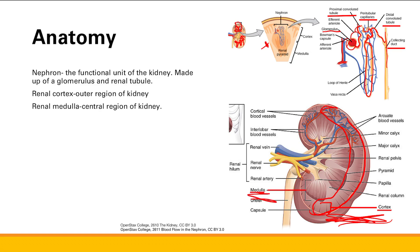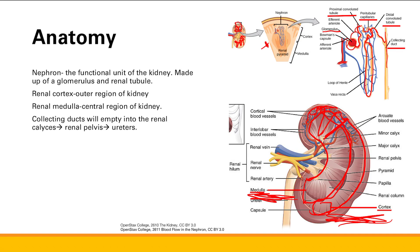Next is the renal medulla — that's the inner central region of the kidney. The nephron is going to traverse both the renal cortex and medulla. The glomerulus and proximal convoluted tubule are up in the cortex, then it descends through the loop of Henle into the renal medulla, comes back up into the cortex for the distal convoluted tubule, then the collecting duct descends back down into the medulla.